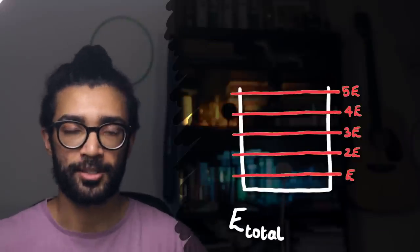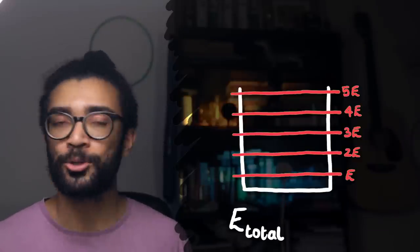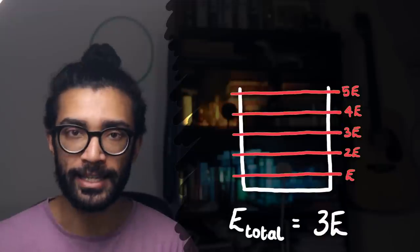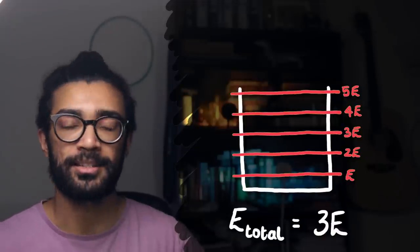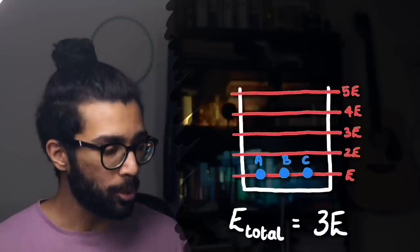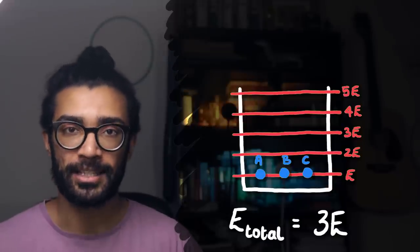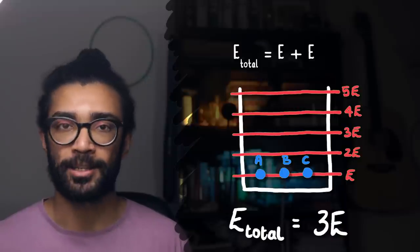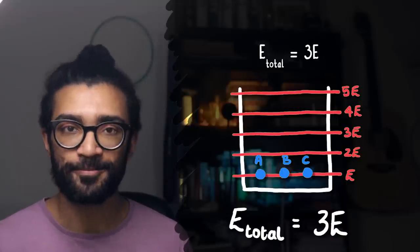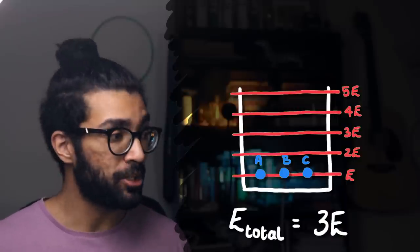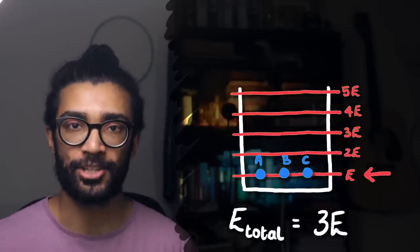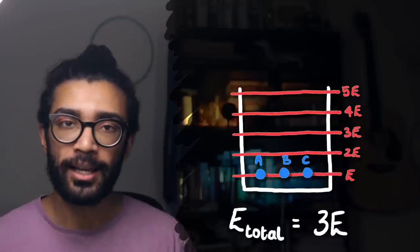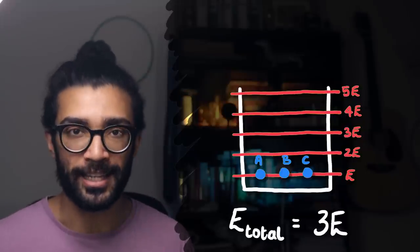But if we think about another system, for example, where this time the total energy of our system is 3E, and it's got three particles, then there's only one possible microstate the system can occupy. One where all of the particles are in the lowest possible energy level, because 1E plus 1E plus 1E is equal to 3E. And there's no other possible combination here, because the lowest energy level these particles can occupy is the E energy level. And if any of them are in a higher energy level, then the total energy exceeds 3E.